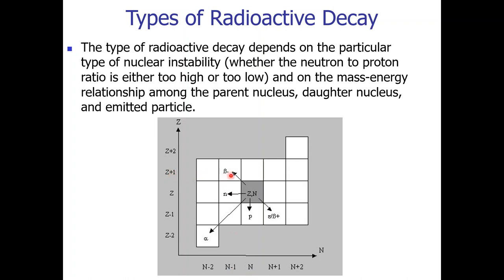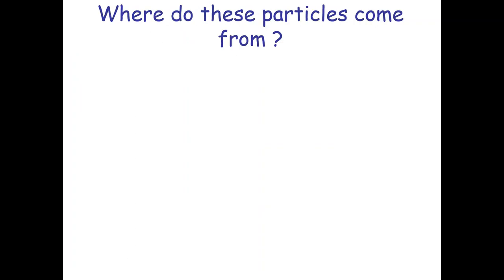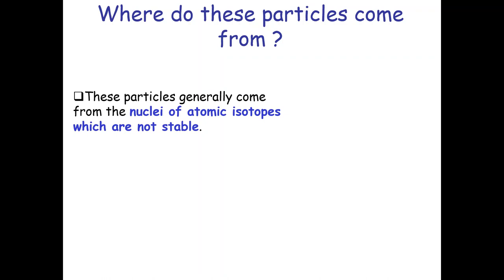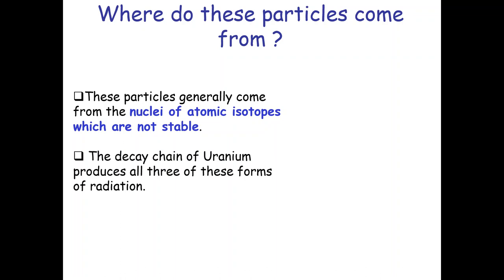During beta-negative (electron) decay, a neutron is converted into a proton, so the neutron number decreases by one and the atomic number increases by one. During beta-positive decay, a proton is converted into a neutron. Students often ask where these particles come from — they generally come from the nuclei of unstable atomic isotopes. The decay chain of uranium produces all three forms of radiation: alpha, beta, and gamma.